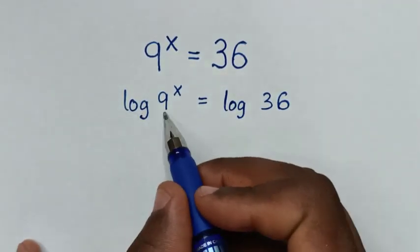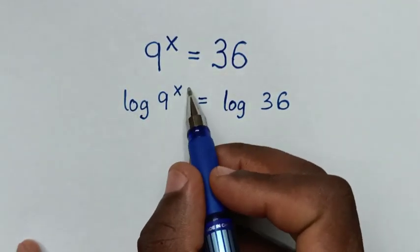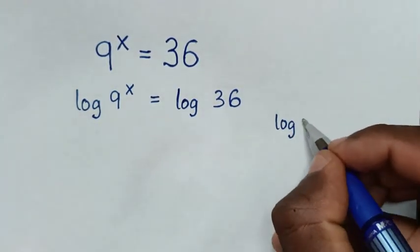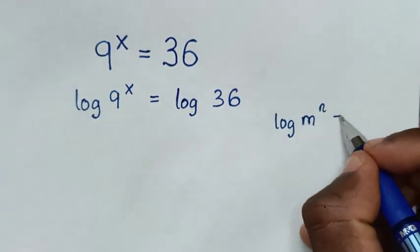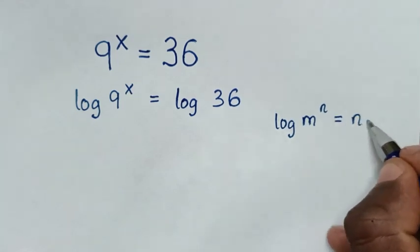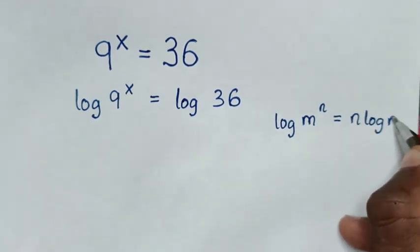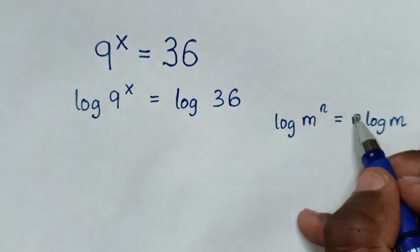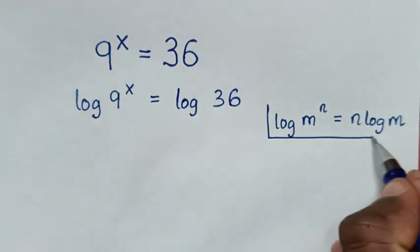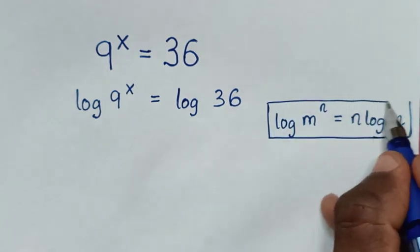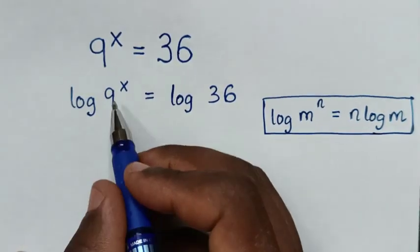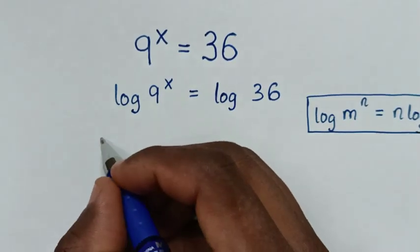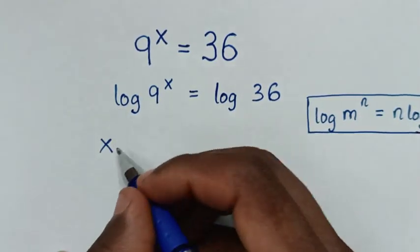Then, from this log of 9 power x, this is in the form of log of m power n, which is equal to n times log of m, whereas this power of m will move to the base. So into here, this power x will move to the base, then it will be x times log of 9.